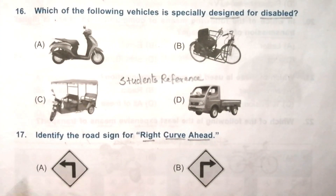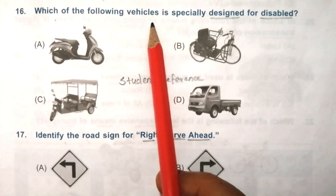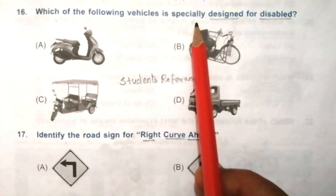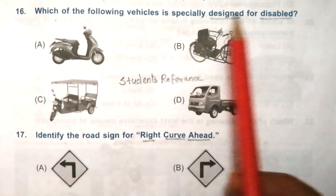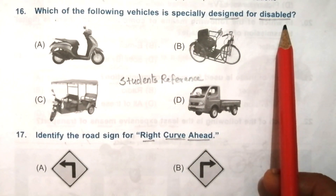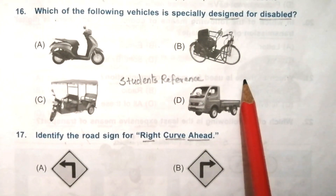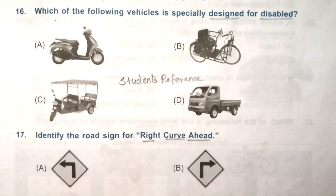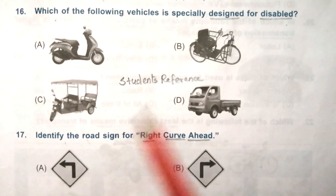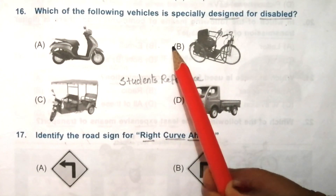Question 16: which of the following vehicles is specially designed for disabled people? Look at the given options carefully. The answer is B.